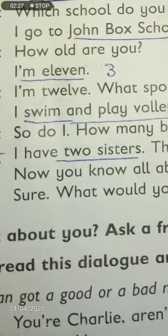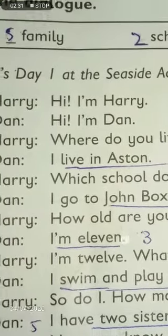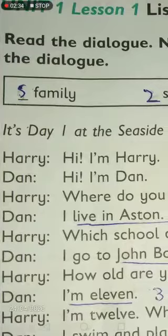The fifth and last thing they discussed is family. Dan asks Harry how many brothers and sisters he has. Dan replies that he has two sisters and their names are Sandra and Emma. So for 'family' you have to write number five.